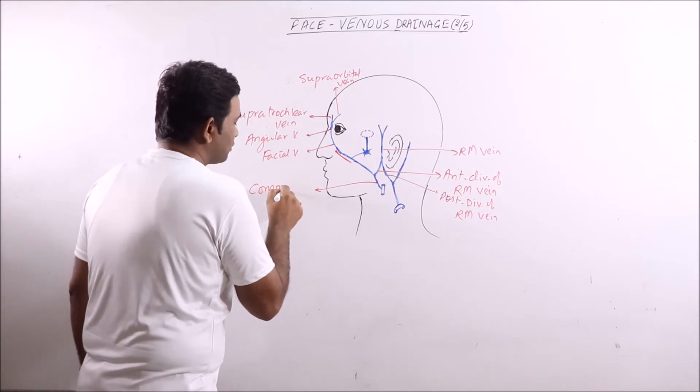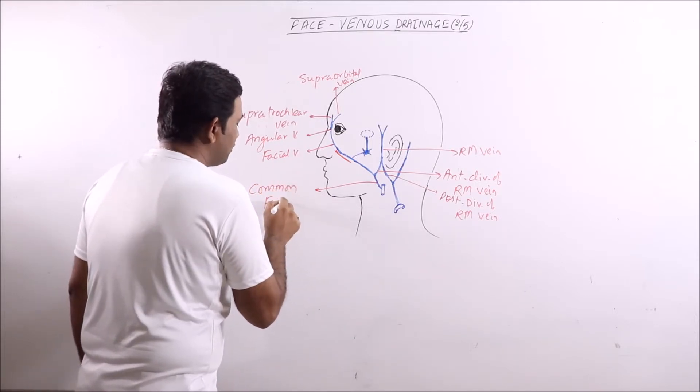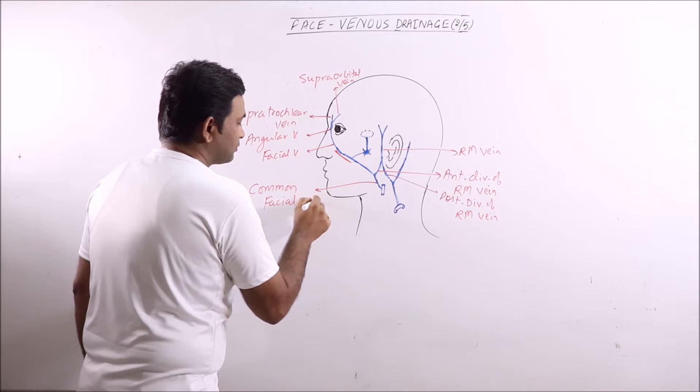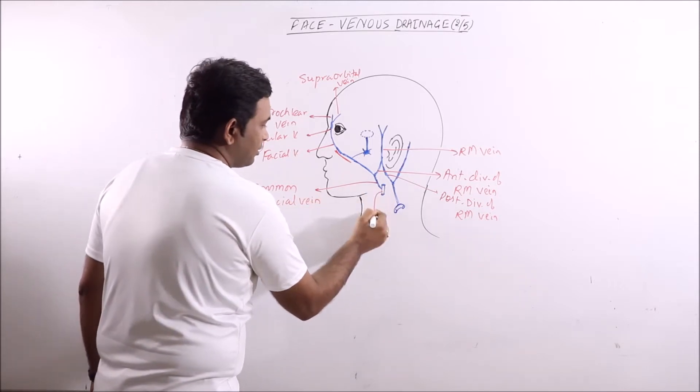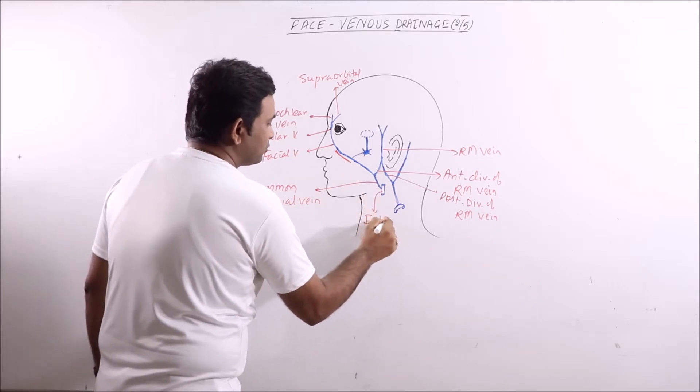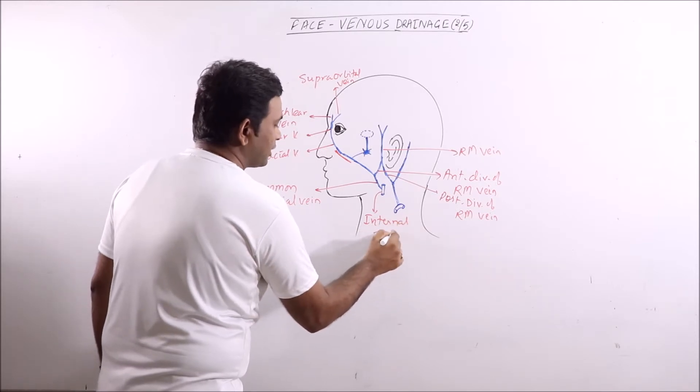This is known as the common facial vein. This common facial vein finally drains into the internal jugular vein.